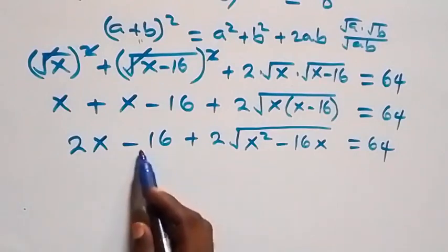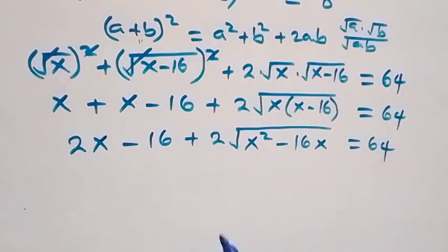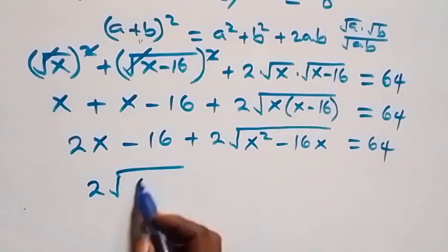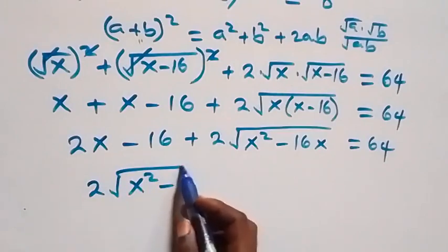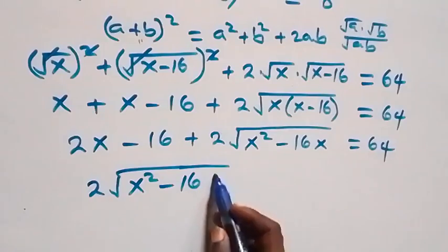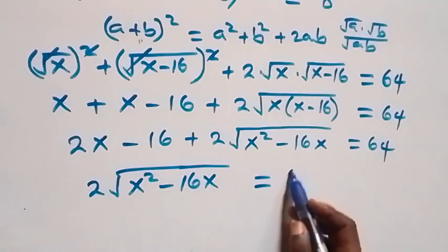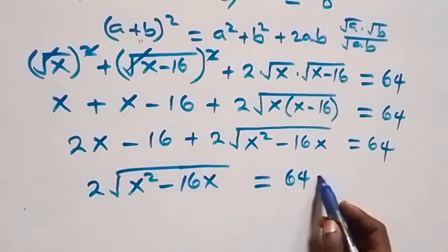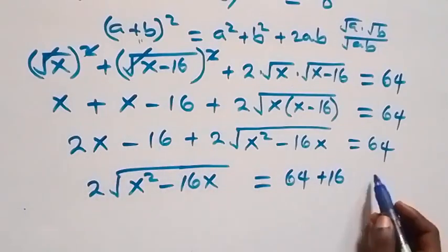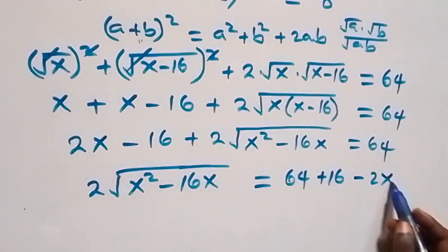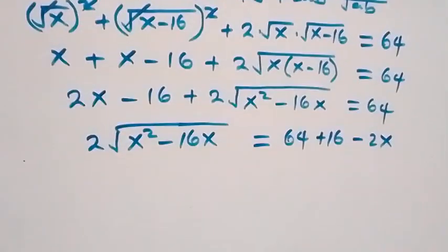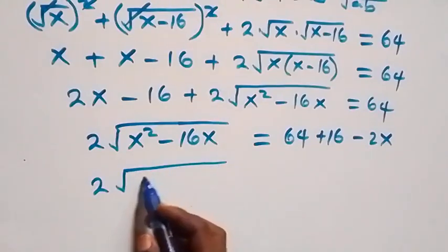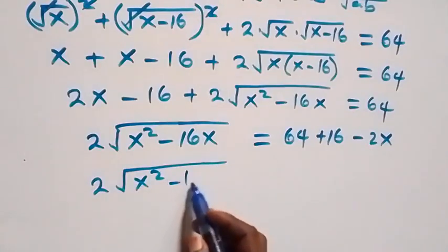Next, let's take 2x minus 16 to the right-hand side. We are left with 2·√(x² - 16x) equals 64 minus 16 — wait, minus 16 comes over as plus 16, and plus 2x comes over as minus 2x. So we have 2·√(x² - 16x) equals 64 + 16 - 2x.